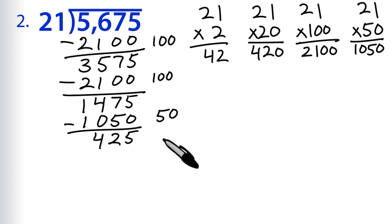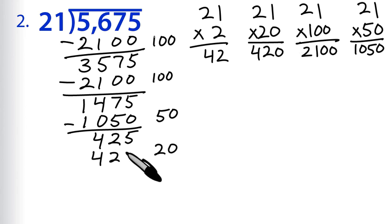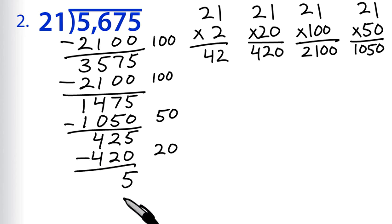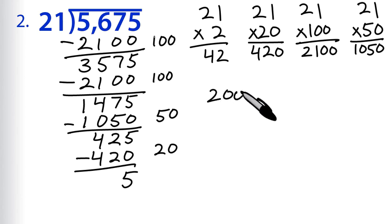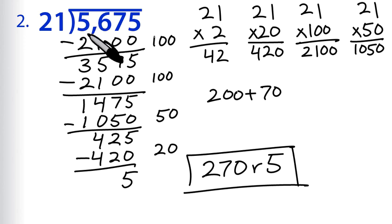425 is still quite a bit larger than 21, so let's keep going. The multiple of 20 would be perfect here: 425 minus 420 is 5. Five is too small to divide further, so 5 is our remainder. Adding up: 100 plus 100 is 200, plus 50 plus 20 is 70, giving us 270 with a remainder of 5. That's what you get when you divide 5,675 by 21.